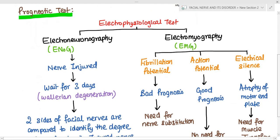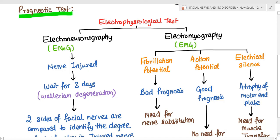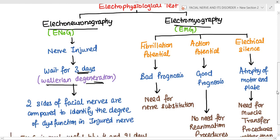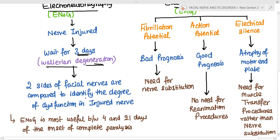Prognostic tests use electrophysiology to predict recovery. Electroneuronography compares both sides of the facial nerve after injury. We wait three days before testing, as Wallerian degeneration occurs during this period. Electroneuronography is most useful between 4 to 21 days after the onset of complete paralysis — this is an important MCQ point.